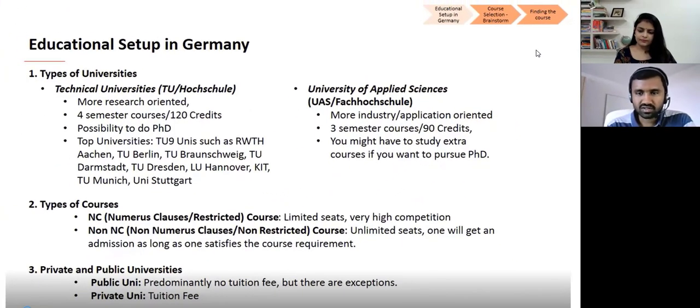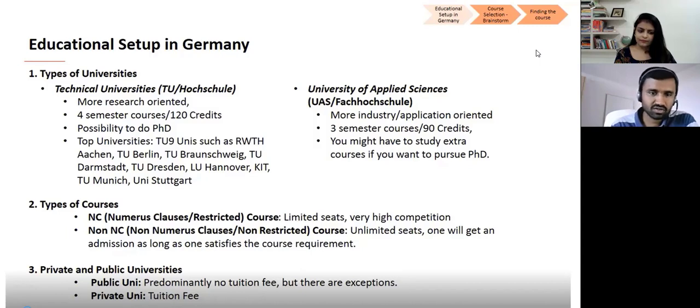Once you do your master's at a Fachhochschule, you cannot directly start your PhD — you will have to do a few more courses and then take up your PhD at a Technical University. On the left-hand side you can see the top TU9 universities, which are among the top universities in Germany, such as Aachen, Berlin, Braunschweig, KIT, Munich, and Stuttgart. To sum up, Technical Universities are more theoretical-oriented, and if someone prefers practical knowledge, then Fachhochschule is the right choice for them.